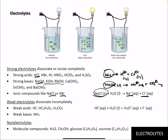Weak electrolytes dissociate incompletely. Examples are mostly weak acids — anything that starts with H but isn't one of the six strong acids — like acetic acid, hydrofluoric acid, and carbonic acid. Weak bases, of which ammonia is the primary example, are also weak electrolytes. HF dissociates to give H⁺, generating hydronium, and fluoride — but only partially. There's still some HF left in solution, mostly HF with some H⁺ and F⁻.